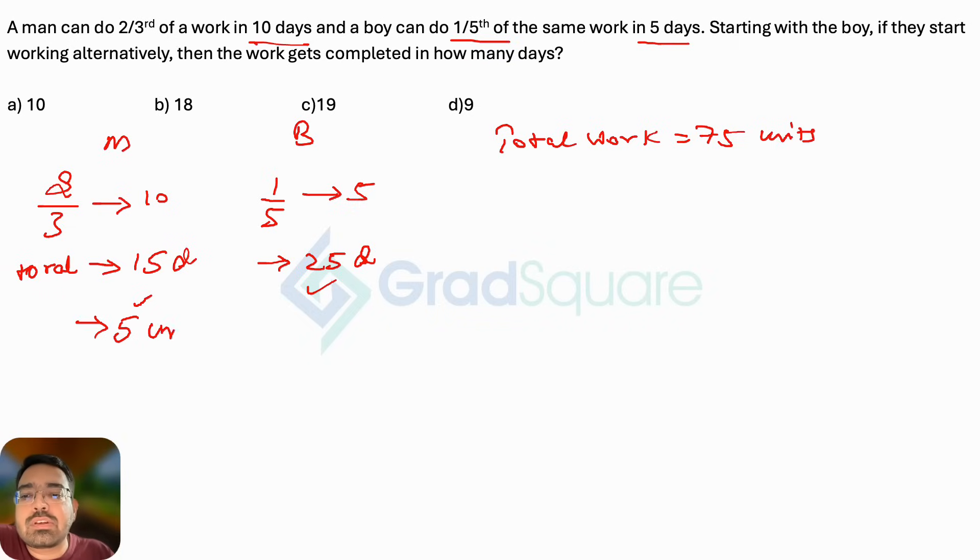And the number of units done by a boy every day will be 75 divided by 25, that's going to be three units per day.